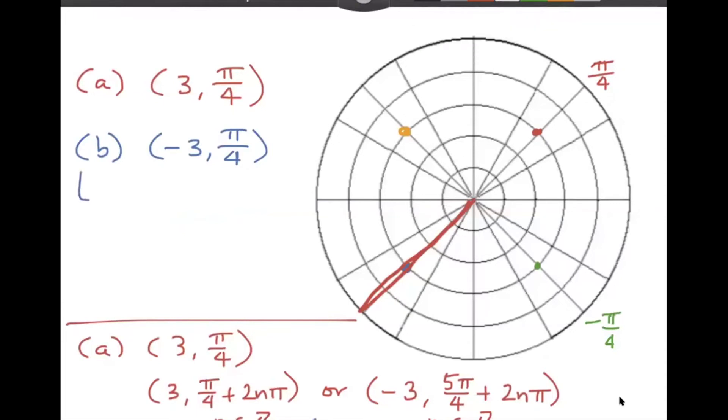First of all, you can add or subtract any multiple of two pi to this pi over four, leaving the value of R alone. Maybe this time I'll put the N as an element of the integers at the end. You could also make the value of R positive. And remember that this point was right there. So you could identify it with a positive value of R and use five pi over four. And again, adding or subtracting any multiple of two pi. So hopefully you get the idea there. I'm going to go ahead and switch back to the presentation.